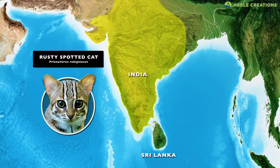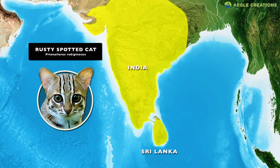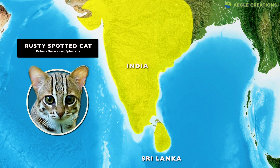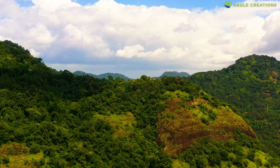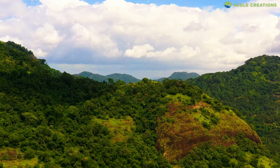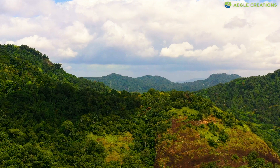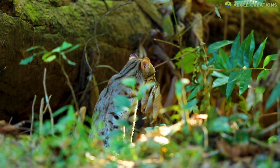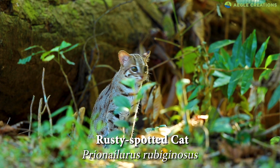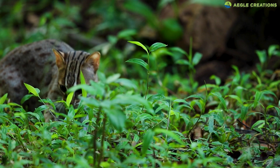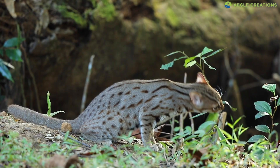The rusty spotted cat has a restricted global distribution in India and Sri Lanka. In Sri Lanka, it has been recorded in all climatic zones and forest types, even close to suburban areas. Rusty spotted cats inhabit a vast range of habitats, including dry-zone scrublands and montane forests. Out of all four wild cats in Sri Lanka, it's the most elusive and rarest. Little is known about this small feline — its ways are still a mystery, and there's no definitive count as to how many of them live in the wild.